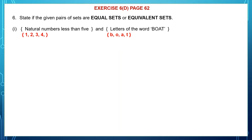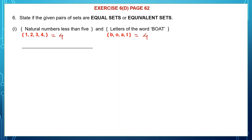B, O, A, T is the second set. As you can see, the elements are not the same, but the number of elements is the same — there are four elements in each set. So such sets, where only the number of elements is the same but the elements themselves are not, are called equivalent sets.